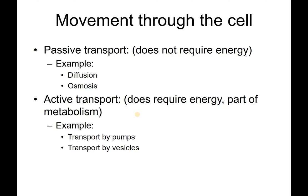There are different ways things move through a cell. Passive transport does not require energy — good examples are diffusion and osmosis, which just move across the membrane. Active transport does require energy; it's part of your metabolism and takes pumps to do this, like your sodium-potassium pump, or transport vesicles.